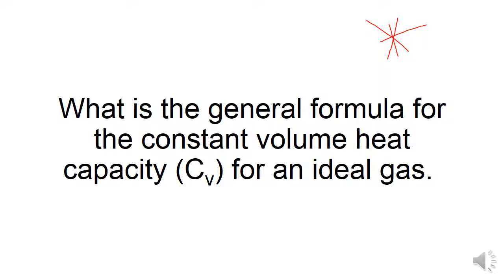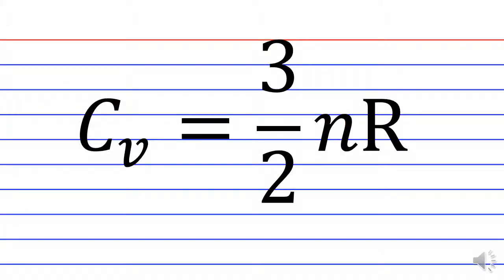What is the general formula for the constant volume heat capacity for an ideal gas? That's for an ideal monatomic gas, one atom. C sub V equals three-halves nRT, where n is the number of moles. R again is the universal gas constant, 8.314 joules per mole kelvin.